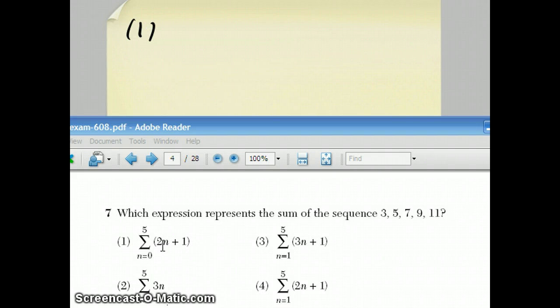When you plug 0 in, you get 2 times 0 is 0 plus 1, which is 1. Then you plug 1 in, 2 times 1 plus 1 is 3. And as you can see, that's not becoming 3 plus 5 plus 7 plus 9 plus 11. So we're going to stop doing that choice.